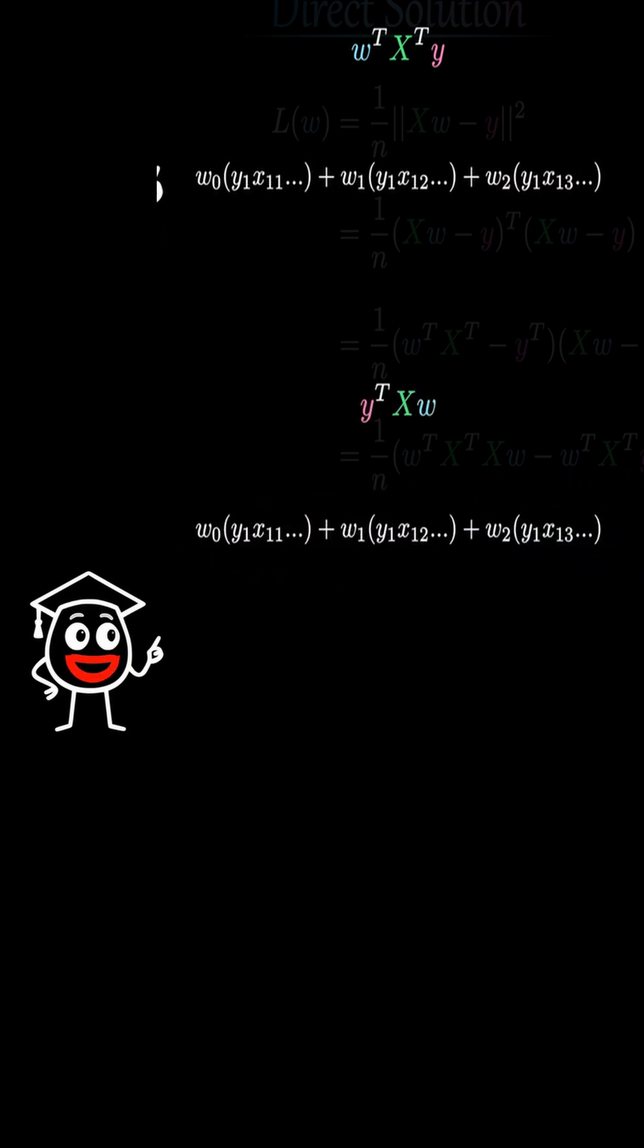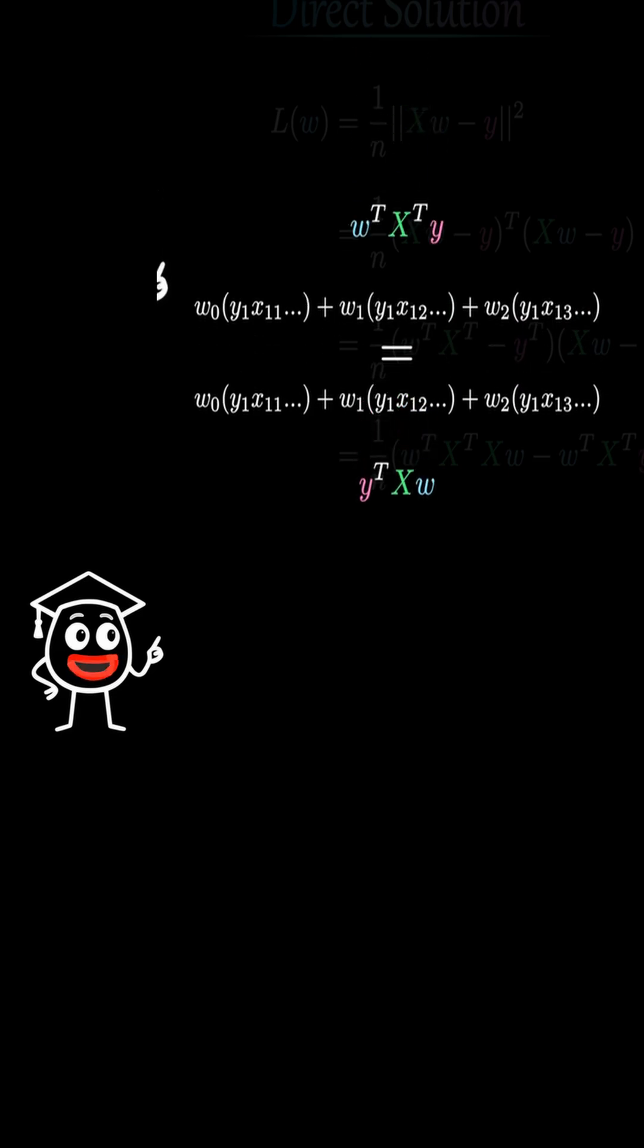Once you get used to it, you'll quickly notice that this vector matrix vector structure always results in a scalar.